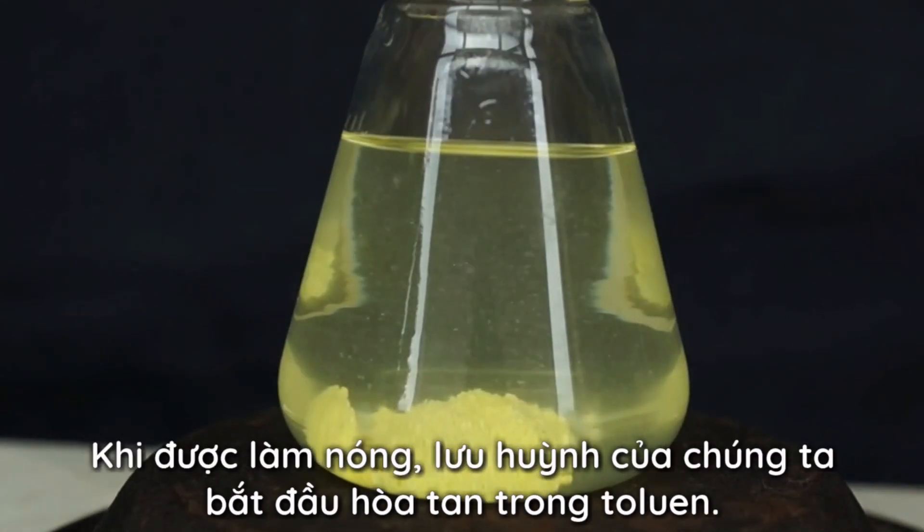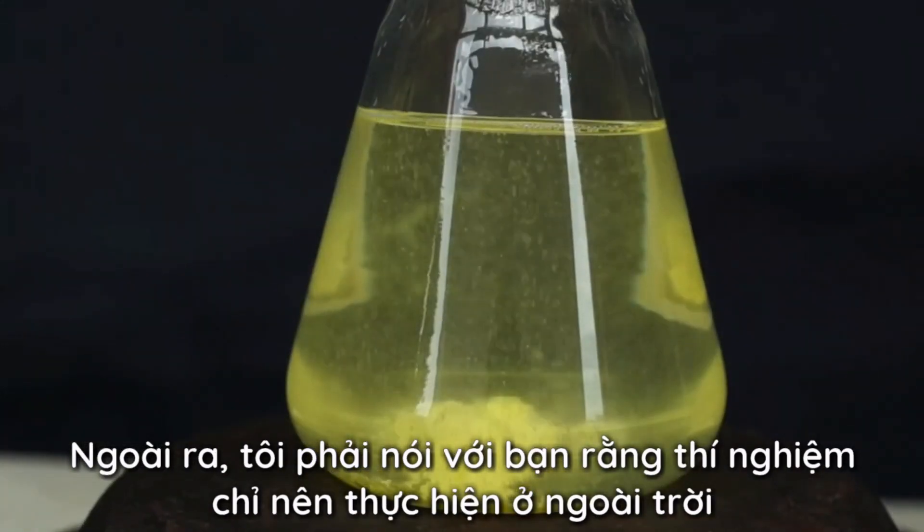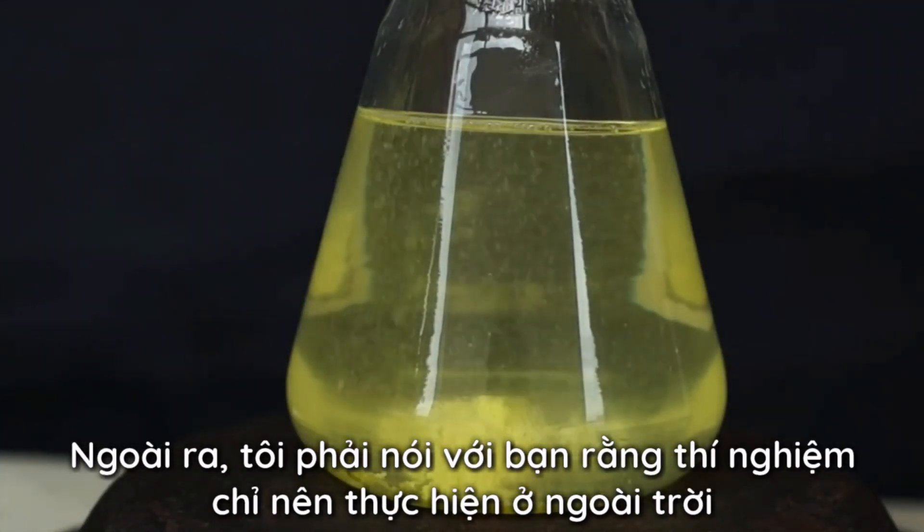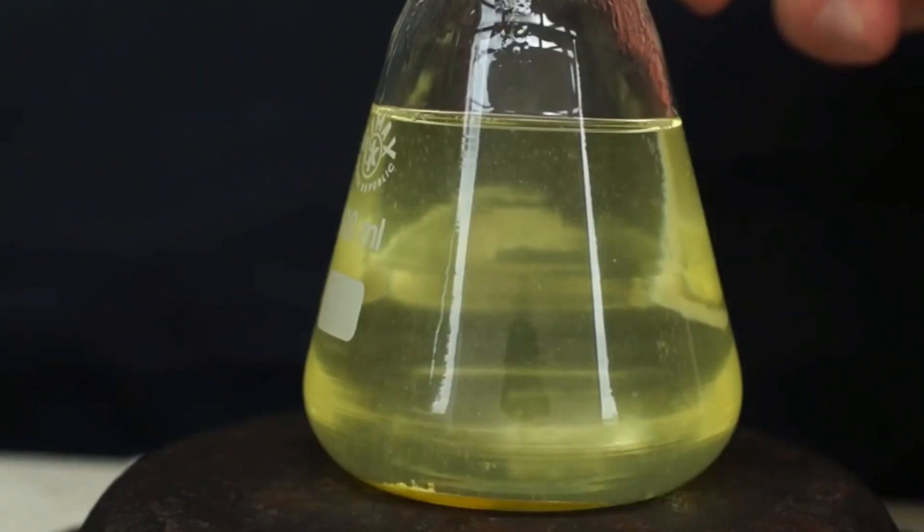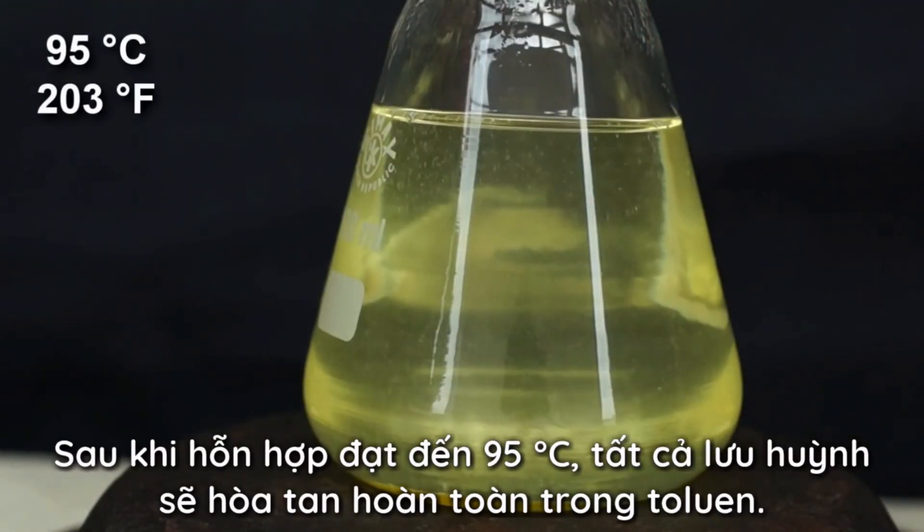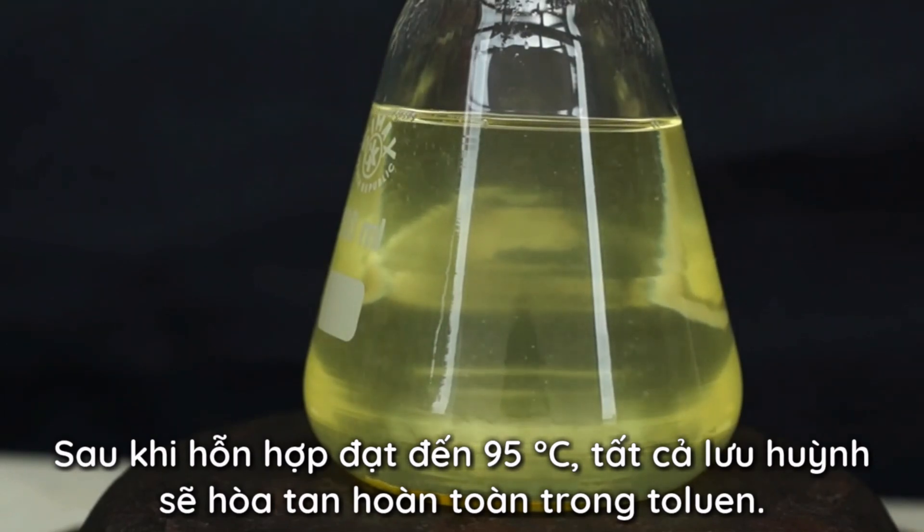When it's heated, our sulfur starts to dissolve in toluene. Also, I have to tell you that this experiment should only be done outdoors or inside a fume hood. After the mixture reaches 95 degrees Celsius, all the sulfur will completely dissolve in toluene.